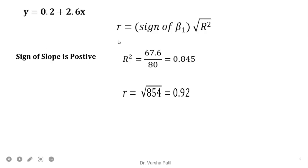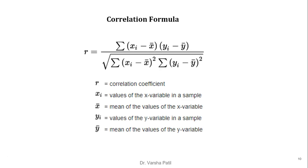To find the coefficient of correlation, we use R = sign(β₁) × √R². With R-squared equal to 0.845 and a positive sign, the square root of 0.845 gives R = 0.92. If we find the correlation coefficient using Pearson's formula — which is the sum of (x minus x-bar)(y minus y-bar) divided by the square root of the sum of (x minus x-bar)² times the sum of (y minus y-bar)² — we also get the same result of 0.92. This is similar to the covariance formula.